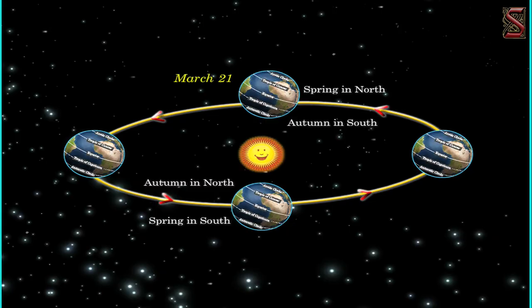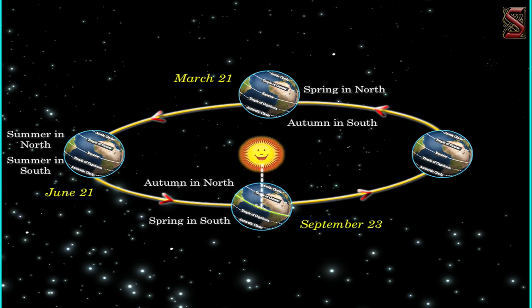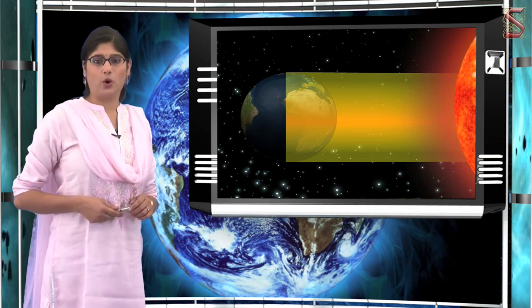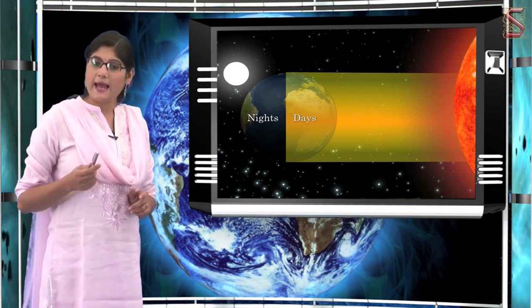Let us see the location of the sun in various months. On March 21st, the sun is on the equator. On June 21st, the sun is on the Tropic of Cancer. On September 23rd, the sun is on the equator again. On December 22nd, the sun is on the Tropic of Capricorn. The days of March 21st and September 23rd experience equinoxes — when the length of the days and nights are equal all around the world. Only on these two days are the lengths of day and night equal.